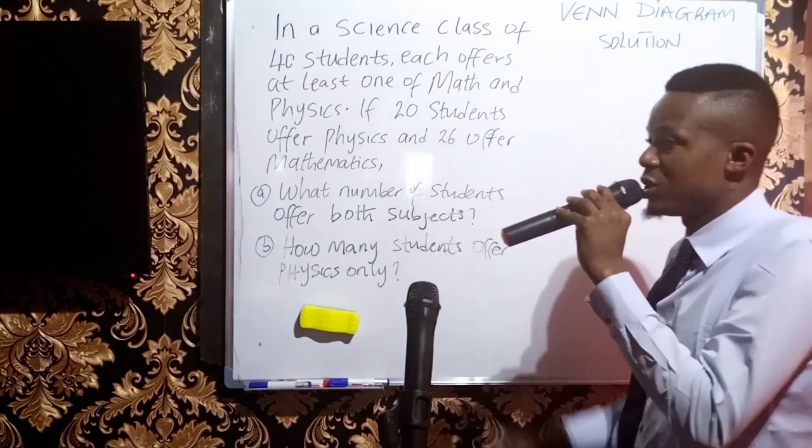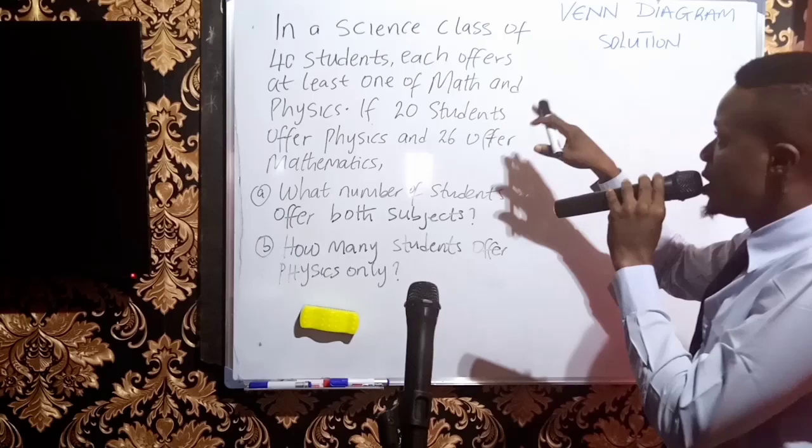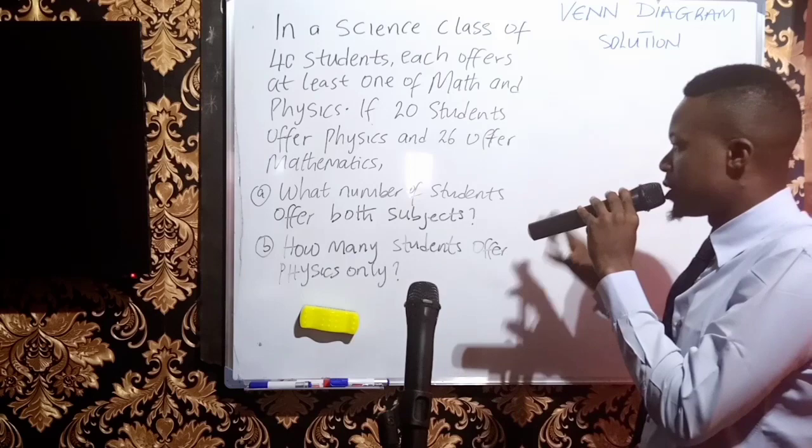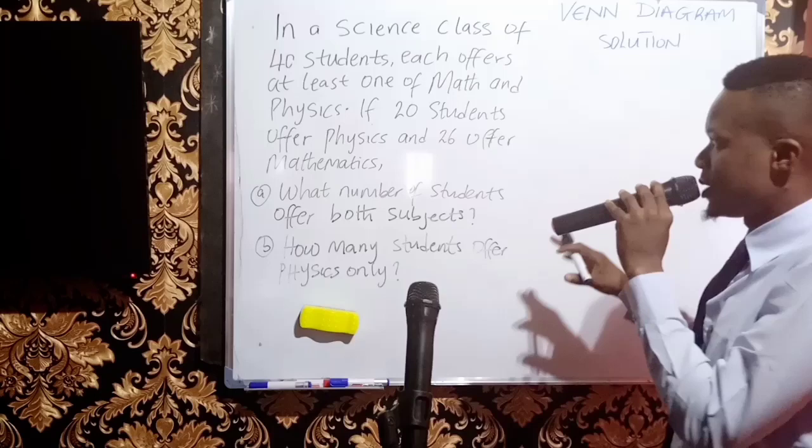We are told that in a class of 40 students, each student offers at least one of math and physics. If 20 students offer physics and 26 offer mathematics, what number of students offer both subjects? And how many students offer physics only?